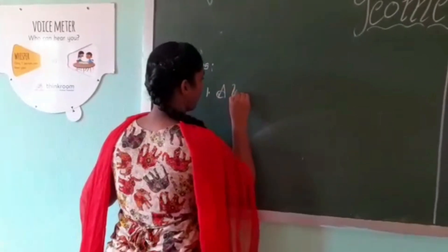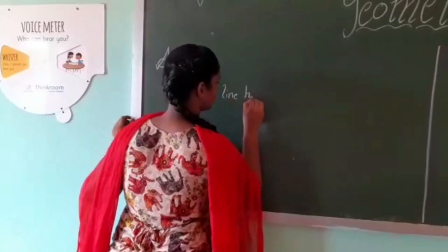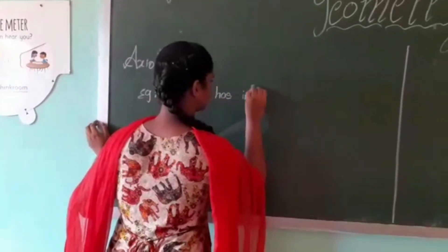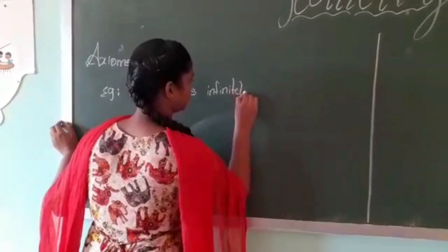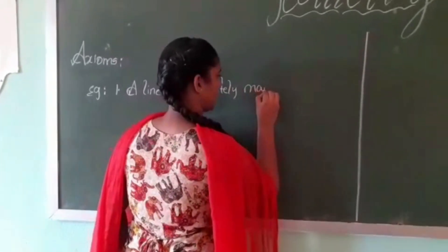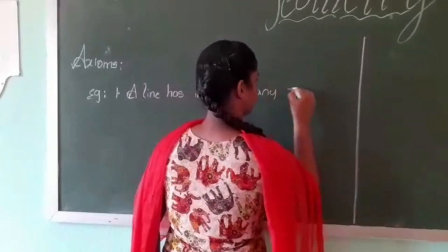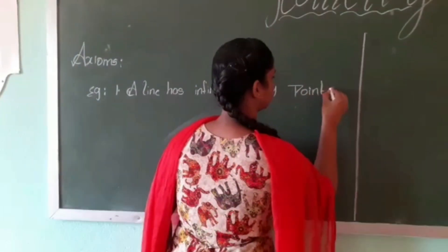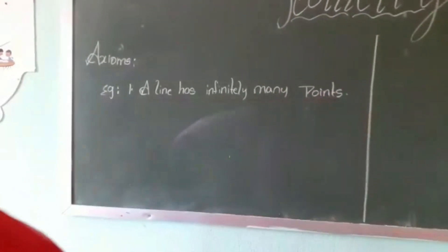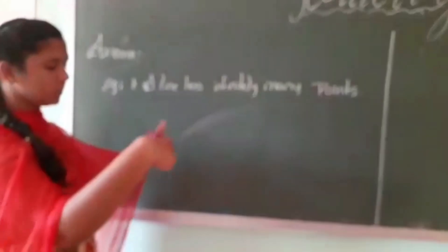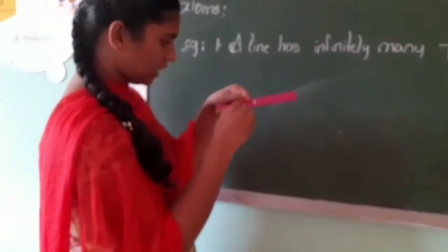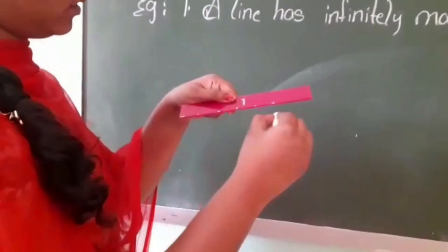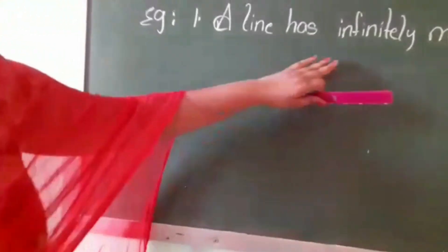A line has infinitely many points. Let us assume this is a line — on this line we can draw infinitely many points. So we can say that a line has infinitely many points.